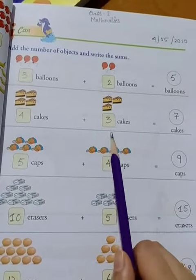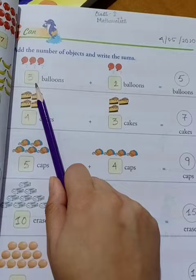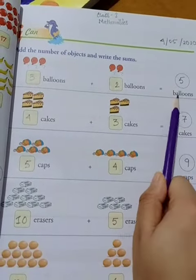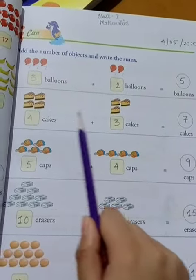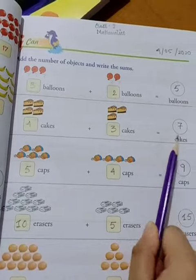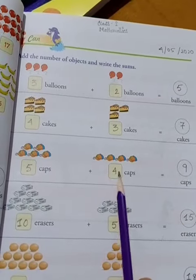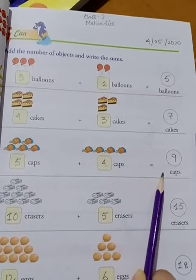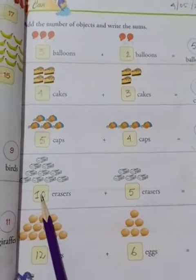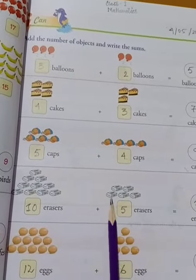Next, four cakes plus three cakes equals seven cakes. Five caps plus four caps equals nine caps. Ten erasers plus five erasers...